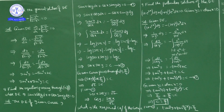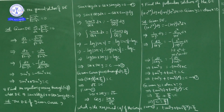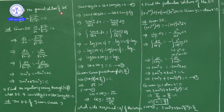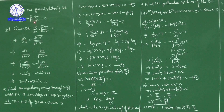Hello students. Now we are discussing differential equation miscellaneous exercise problems. Question number 6: find the general solution of the differential equation dy/dx + √(1 - y²) / √(1 - x²) = 0.